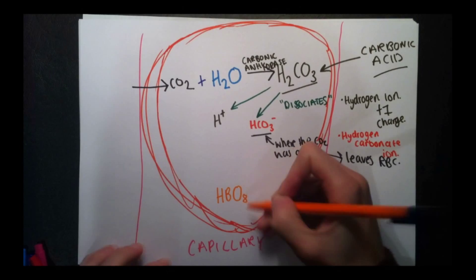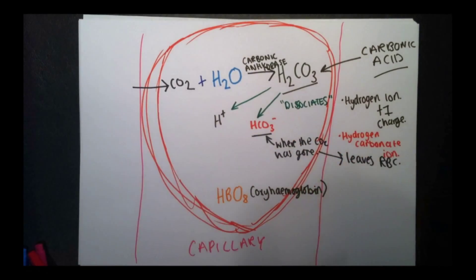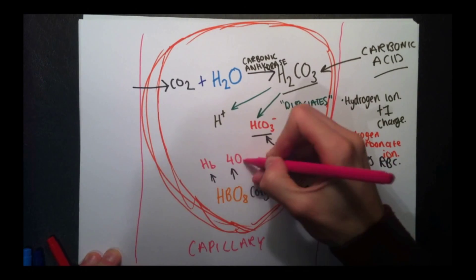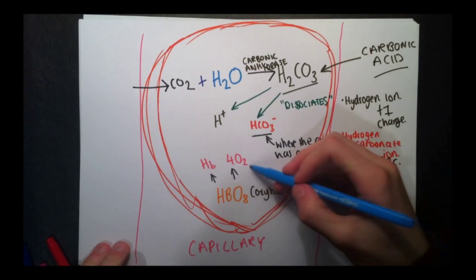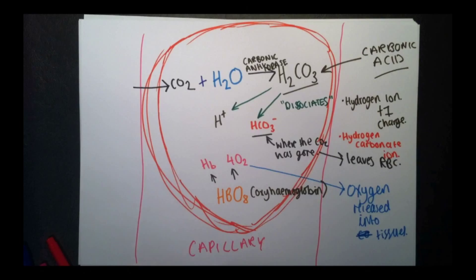So at a different moment in time, oxyhemoglobin, which is oxygen bound with hemoglobin, dissociates to give hemoglobin and four lots of oxygen molecules. So from here, the oxygen is released into the plasma and into the tissues.